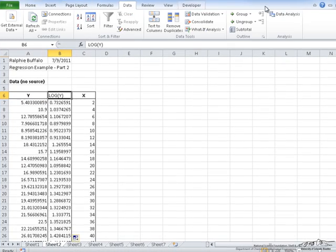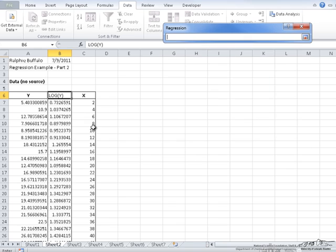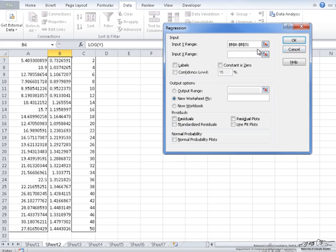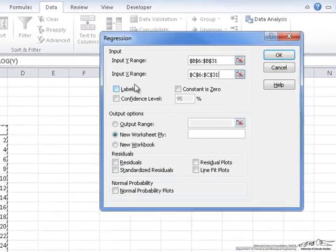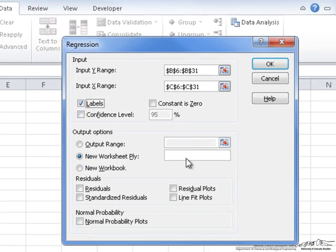And here we have our log(y) and it's going to be base 10. So when I go to data and start my regression, for my input y range, I'm picking the log(y). In my input x range, I'm just picking x. And I did include the labels for both of these, and I would like to output the residuals.